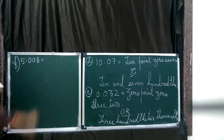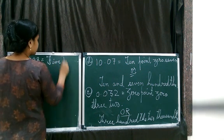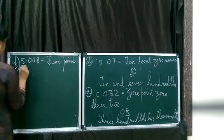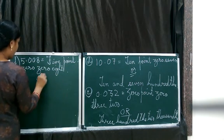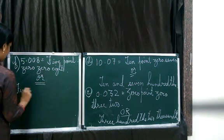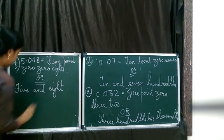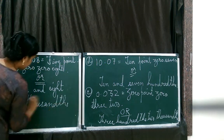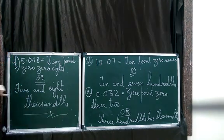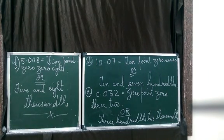F is 5 point 0 0 8. 5 and 8 thousandths, correct? This completes question number 5. Six and seven we are going to do tomorrow.